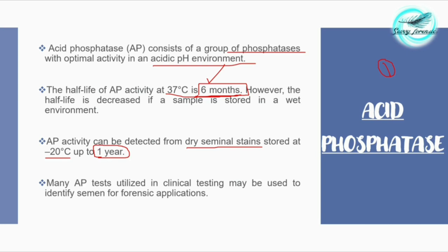Many acid phosphatase tests utilized in clinical testing may also be used to identify semen for forensic applications. These tests are usually used in forensic laboratories for the identification of semen.